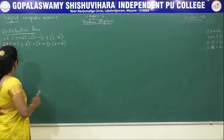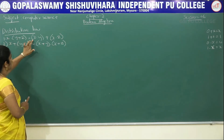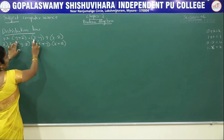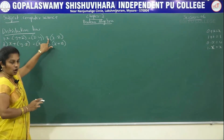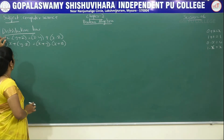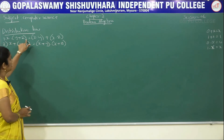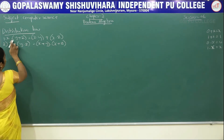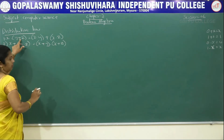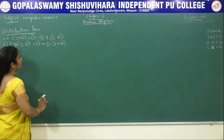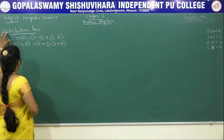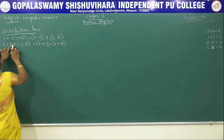In distributive law there are two types. The first is: x into (y plus z) equals x into y plus x into z. Here we use the dot operator between x and (y plus z), distributing to get x·y plus x·z. This is the first distributive law.